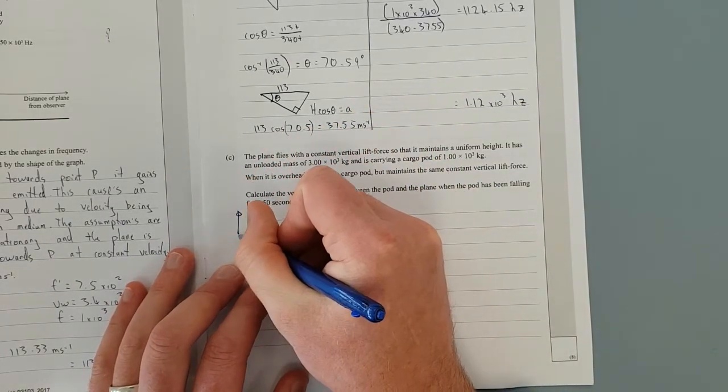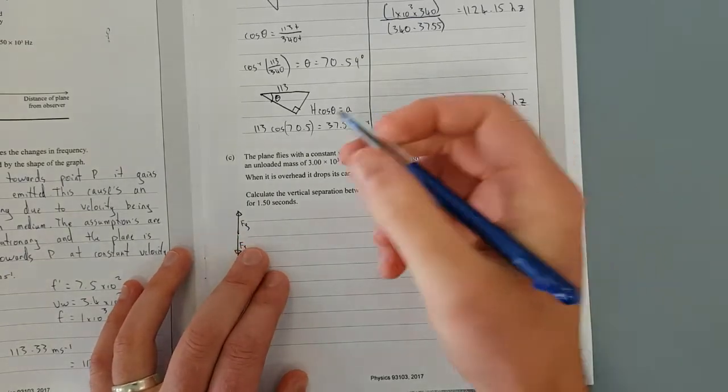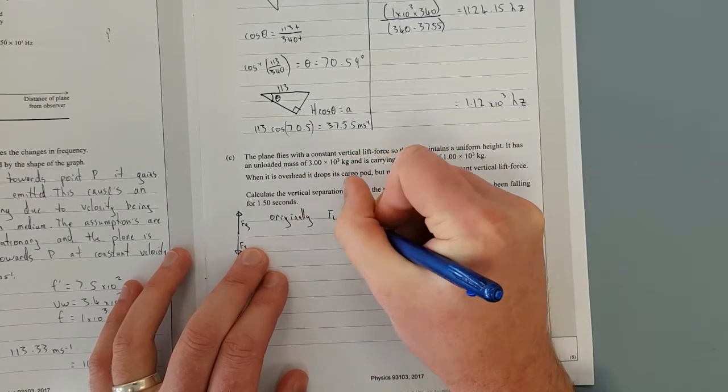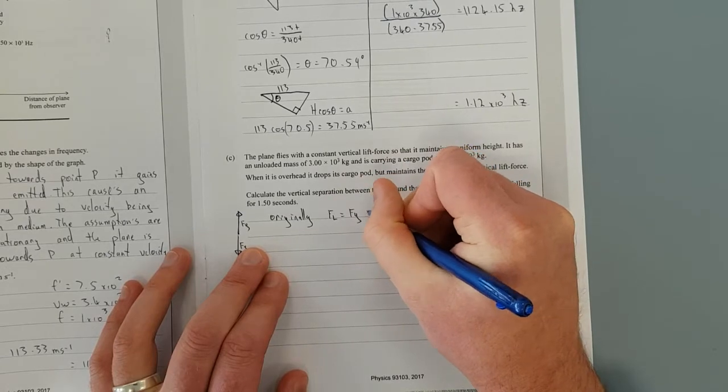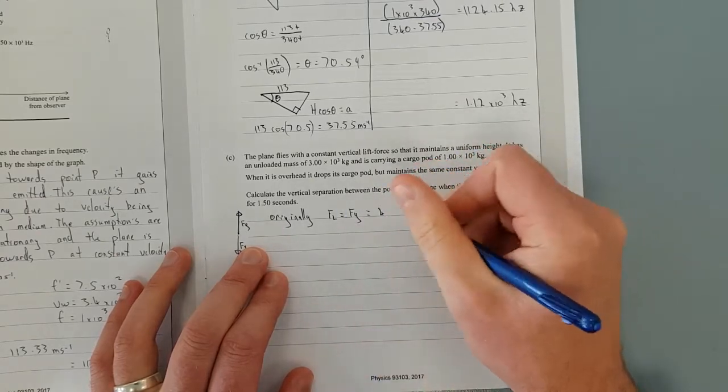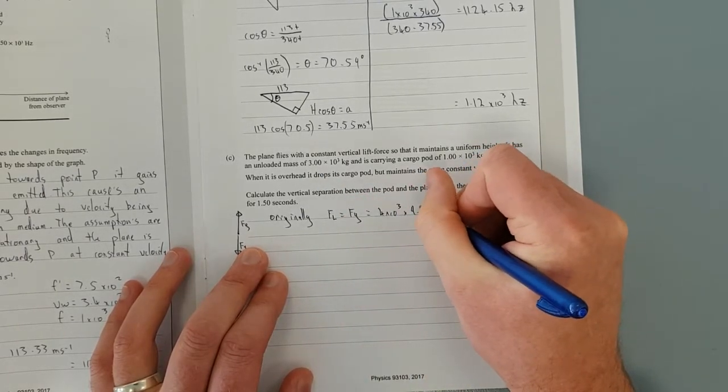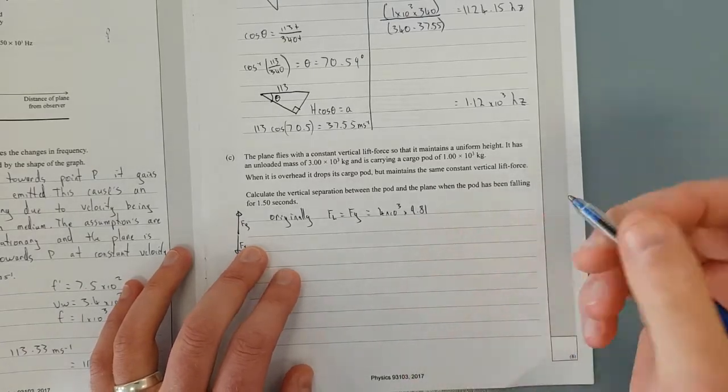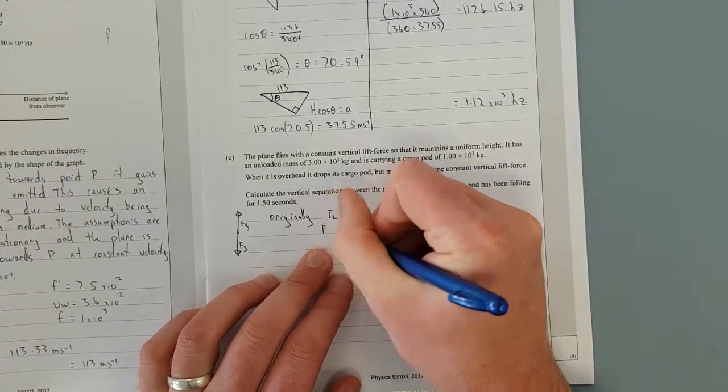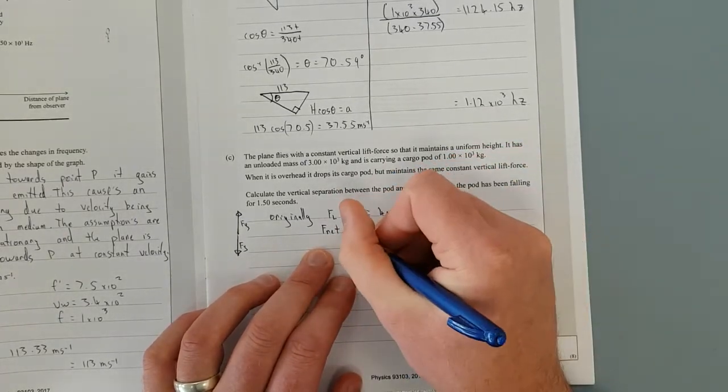First we'll just draw a free body diagram. Originally we have FL is equal to FG. So now we'll just put originally the lift force FL is equal to the gravitational force. In other words that is equal to 4 times 10 to the 3 times 9.81 and that is the lift force. So now we have the net force. The net force here is just equal to 0. Now the net force is equal to lift force minus the gravitational force because these two vectors are pointing in opposite directions.